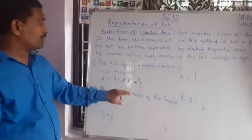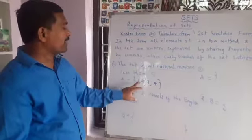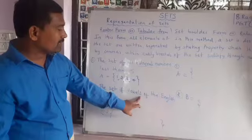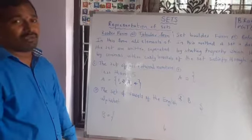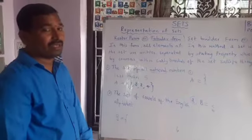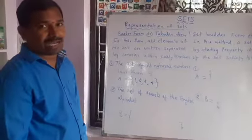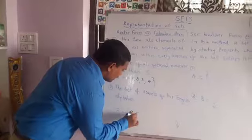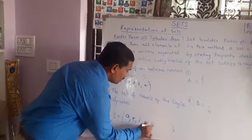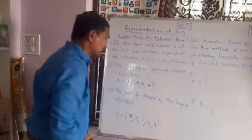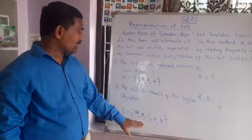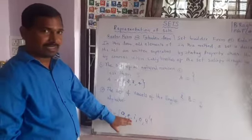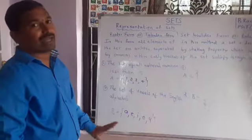Let us take another set: the set of vowels of the English alphabet. The English alphabet is divided into vowels and consonants. The vowels are A, E, I, O, U. So the set of vowels in the English alphabet written in roster form is {A, E, I, O, U}. This is also roster form or tabular form.